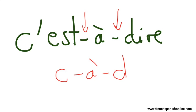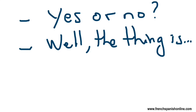C'est-à-dire has another meaning. For example, if someone wants your opinion—yes or no, are you coming?—and you don't want to say no, you're going to say something like 'well, the thing is' and blah blah blah. To translate 'the thing is' in French, we are going to say c'est-à-dire.